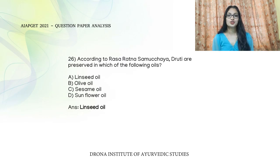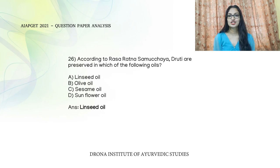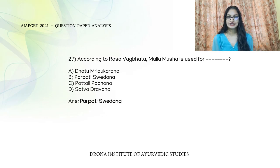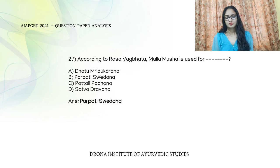Questions from Rasashastra Samukchya: Druthi are preserved in Linseed oil. According to Vakmata, Malla Musha is used for Parpati Svetanam. For Potali Pakartam, Pakku Musha is used. For Sattva Dravanartam, Gostani Musha is used.